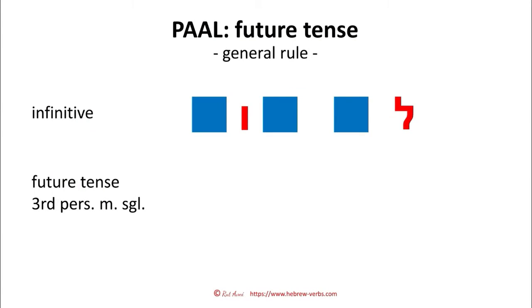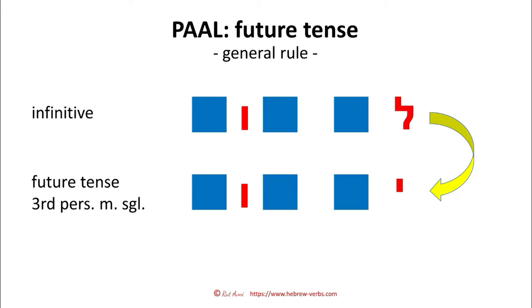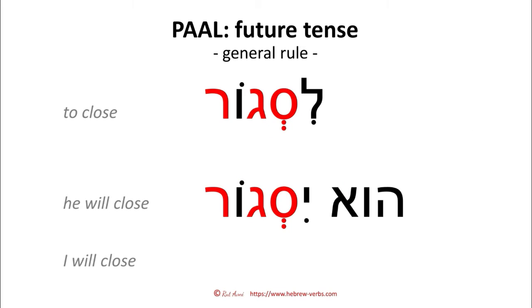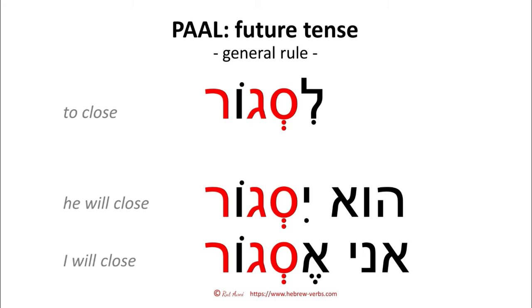Let's first see the general rule of the future tense in Paal. When you have an infinitive that generally looks like this — and we are talking about really regular verbs — with a lamed in front and a vav between the second and the third letter, then if you want to form the future tense of the third-person masculine singular, you drop the lamed and replace it with a yud. That's how you come to the future tense. For example, this is how you come from LISGOR — to close — to HU YISGOR. And if I want to say I will close, then it is ANI ESGOR. That is the general rule for the future tense in Paal.